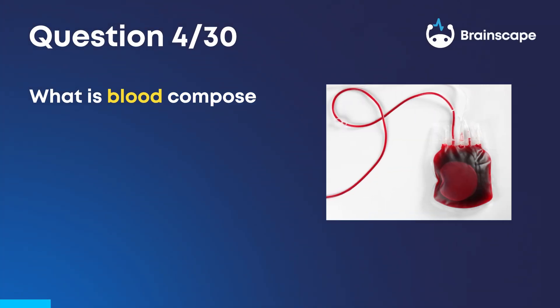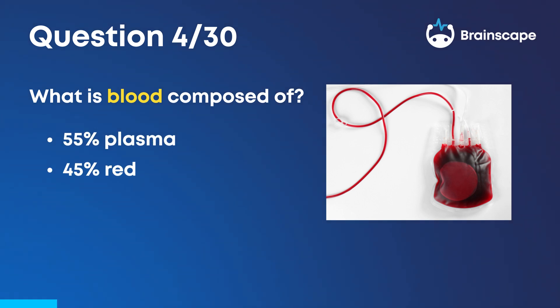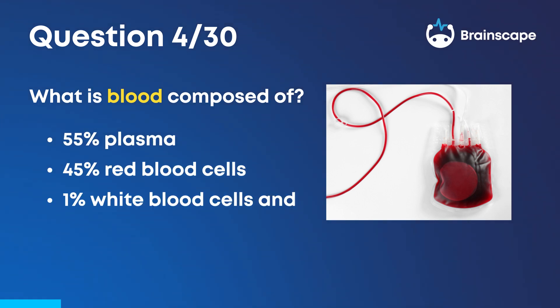Question 4. What is blood composed of? 55% plasma, 45% red blood cells, and 1% white blood cells and platelets.